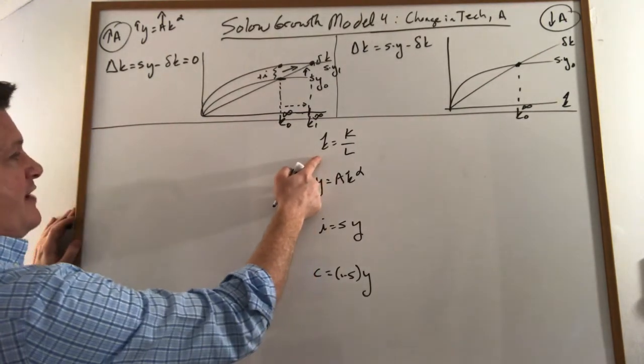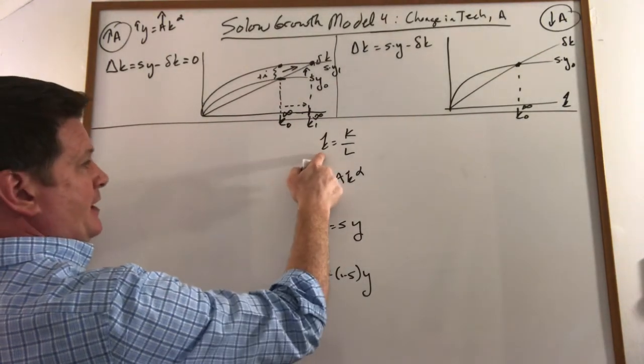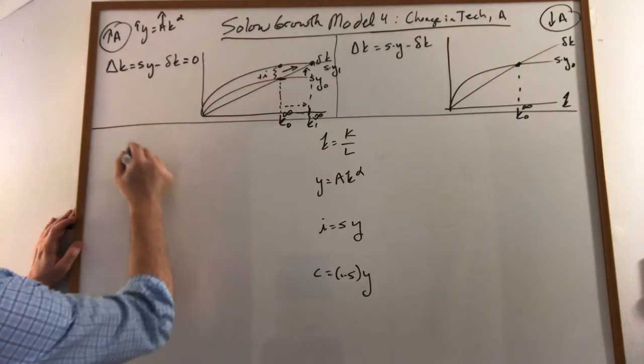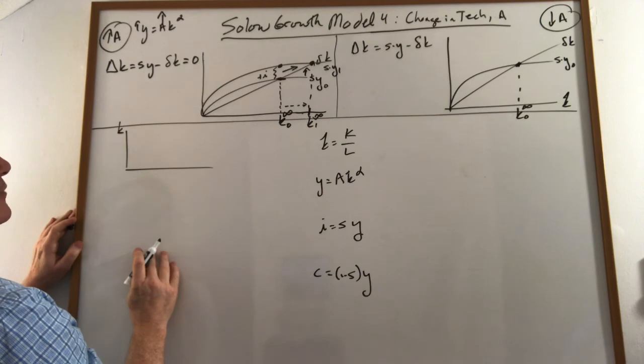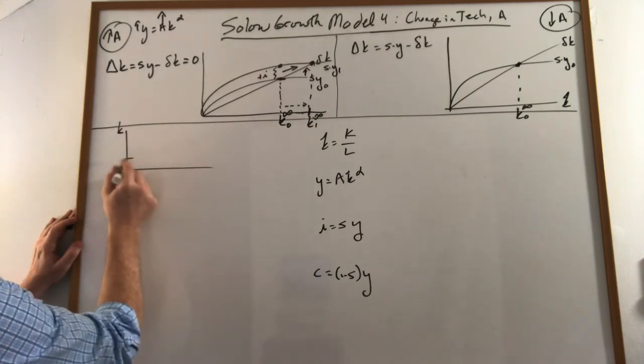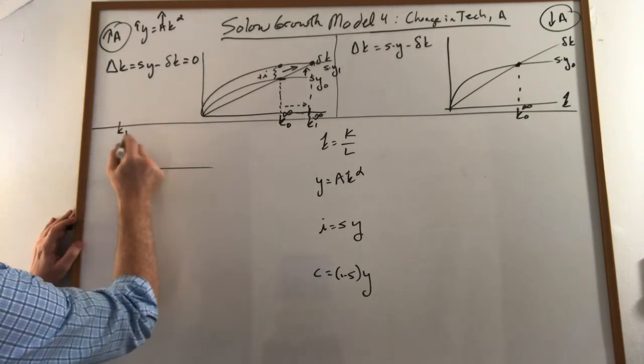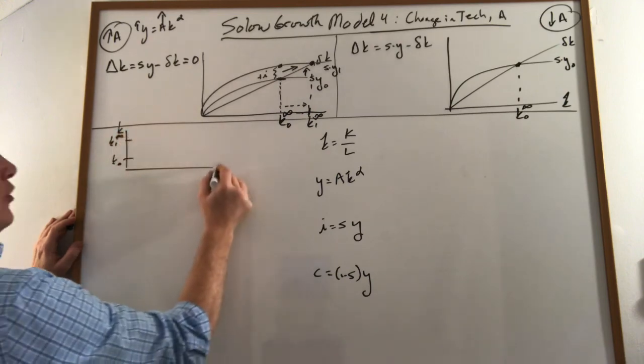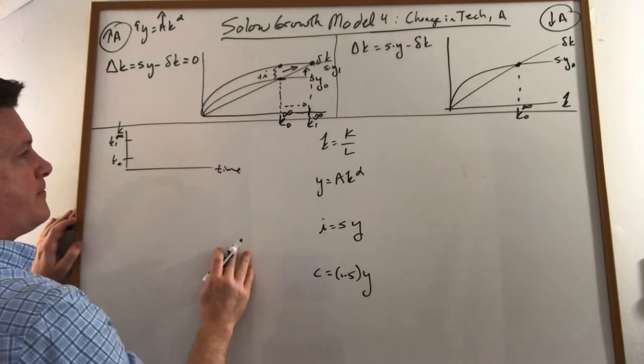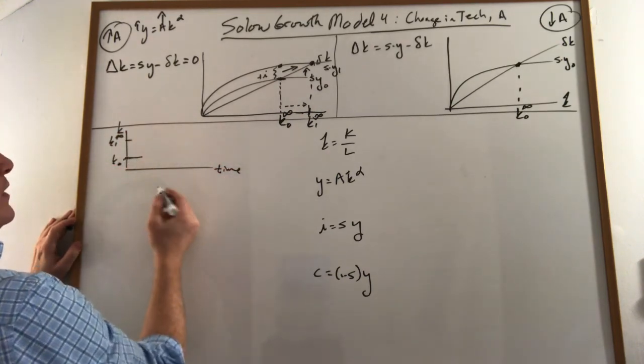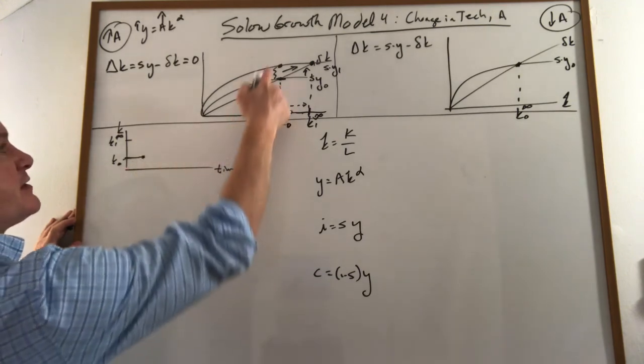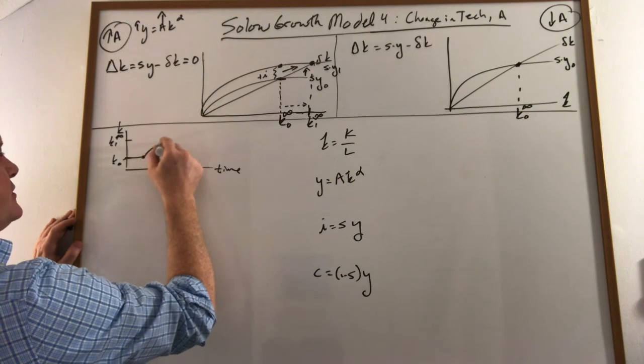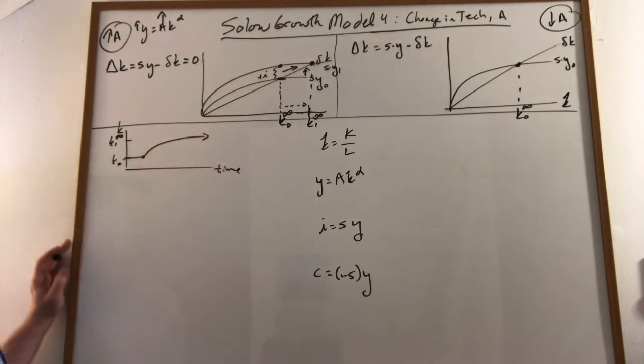We can now graph this over time. I want to look at the time paths here. This is our capital stock. We know it's going to go from a lower steady state up to a higher steady state over time. When technology begins to improve, our capital stock begins to rise because investment is higher than depreciation. And we get a path that looks like that.